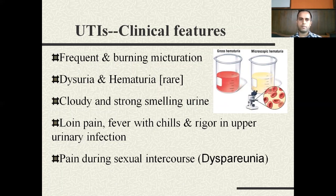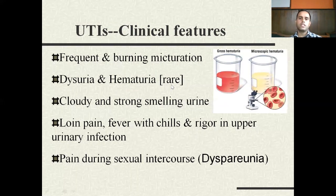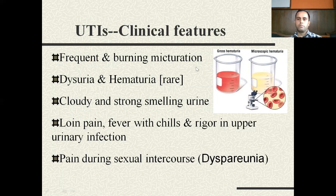Frequent burning micturition is one of the most common clinical features of UTIs. Then there is dysuria and hematuria. Hematuria is a relatively rare condition; it can be gross hematuria or microscopic hematuria. In most cases, when hematuria occurs, it is microscopic hematuria where blood cells can only be seen under the microscope. However, in some cases gross hematuria or frank hematuria is seen, in which the whole urine turns red in color.